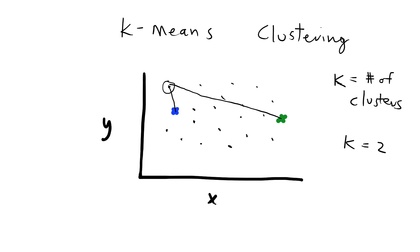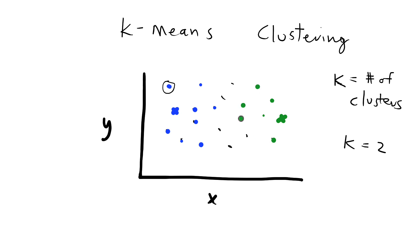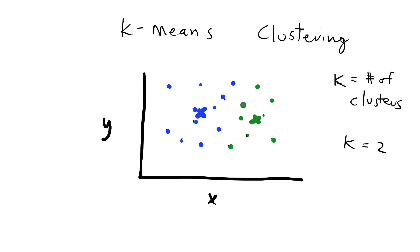This data point here is going to be clustered as part of the blue cluster because it's closer to the random seed in blue, and that's going to create an initial clustering for the first iteration based on the random seeds. All of the points closer to blue would get clustered as blue and all of the points closer to the green random seed would get clustered as green. After this first iteration is completed, these random seeds will no longer be used and a new centroid is going to be calculated based on the first pass of the newly classified data.